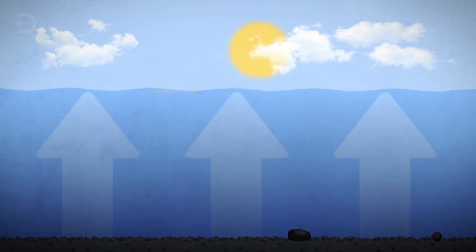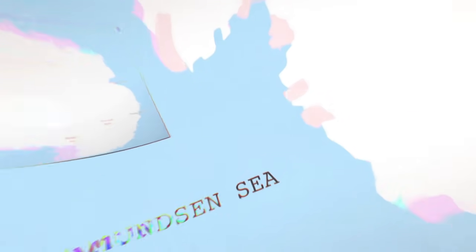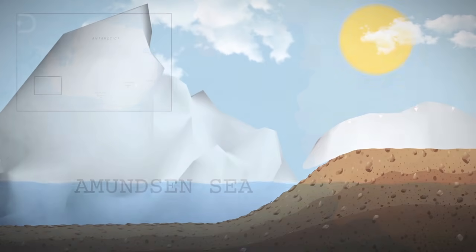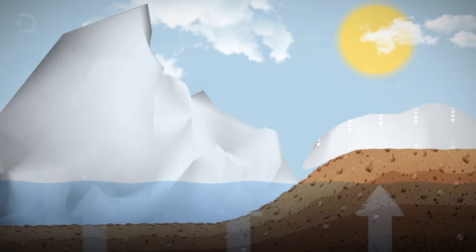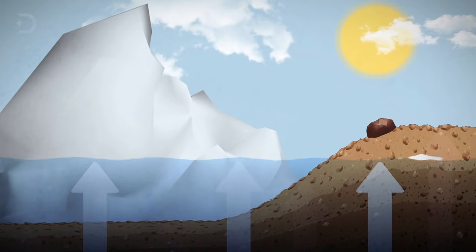That doesn't sound like much until you realize how much ice has already melted. The Pine Island, Thwaites, Haines, Smith and Kohler glaciers, located in the Amundsen Sea embayment of West Antarctica, have all risen by a process called glacial isostatic adjustment. As the ice thins, the land immediately underneath the ice sheet quickly springs back in response to the loss of weight.